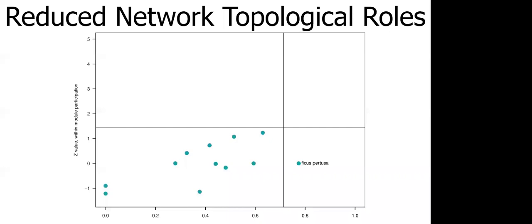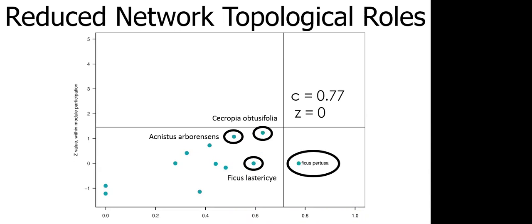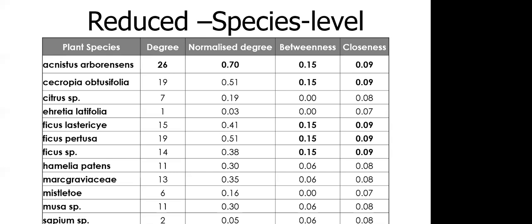The topological graph for the reduced network shows Ficus pertusa as the connector in the network now. Two species that had fairly high c and z scores but did not score outside the threshold - again we have Cecropia and then we had Agonistis showing up. Our Ficus connector from our full network analysis shows up as having a z-score of zero, indicating that it's connected among modules but not within them.